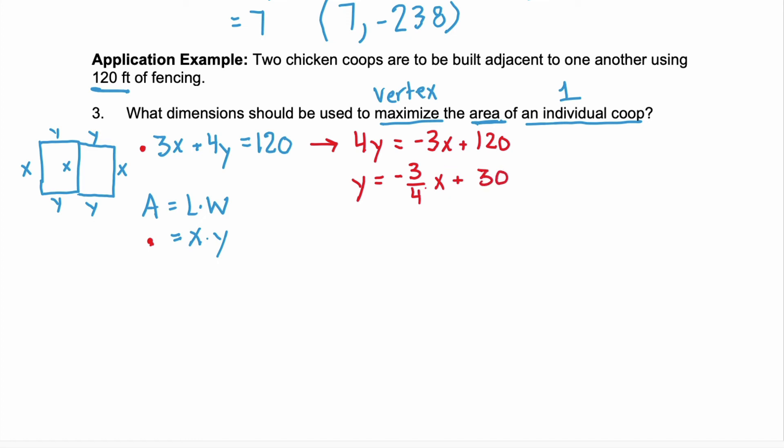We can substitute this in to our area equation for y. And doing that, we have x times our new y, which is negative 3 fourths x plus 30. Distribute that x. Negative 3 fourths x squared plus 30x. Notice what we have. We have a quadratic. And that brings us back to finding the maximum, the vertex. We know how to find the maximum or the vertex for a quadratic.